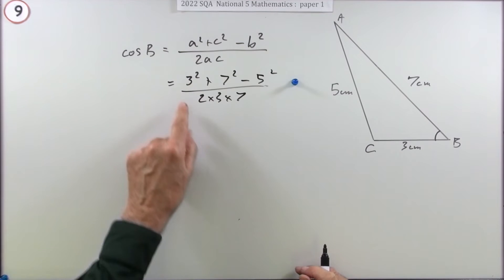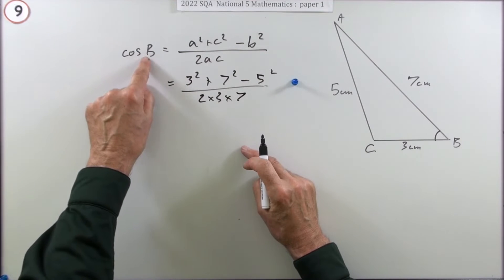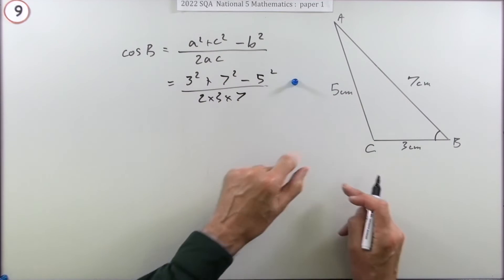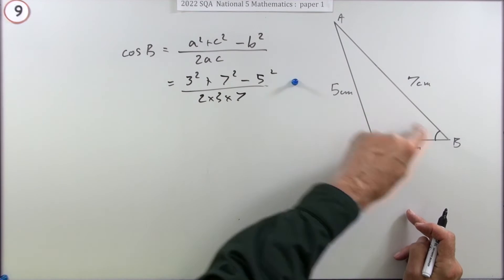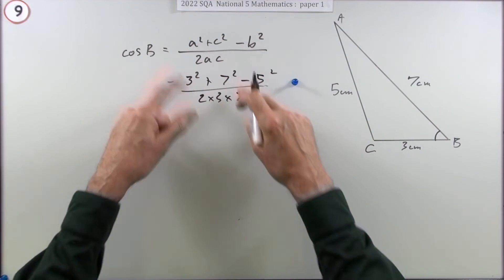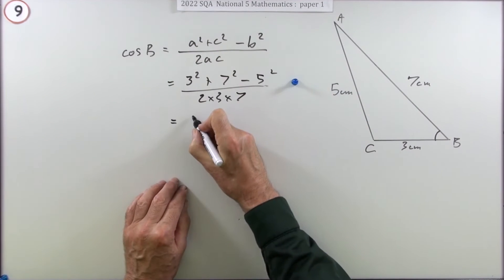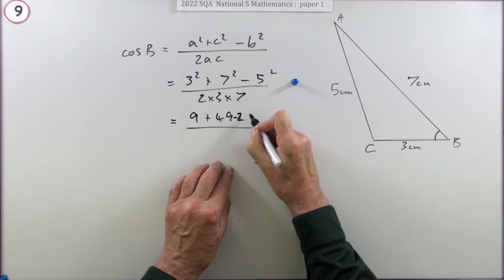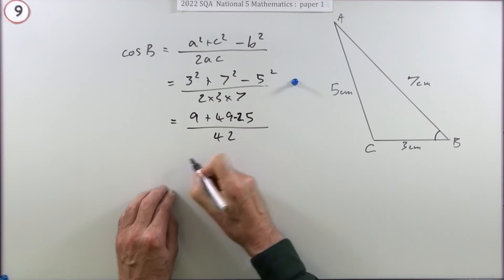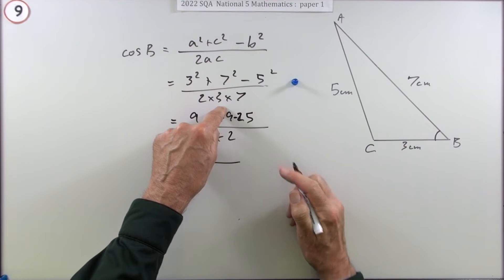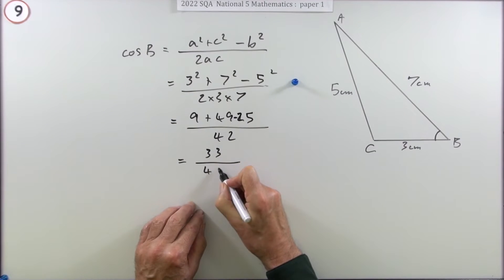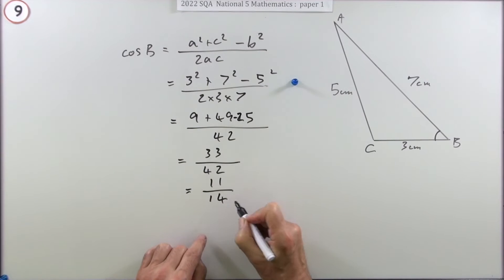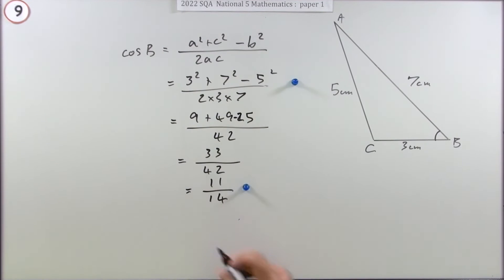You could have gone straight in with that because the pattern is quite easy — whichever angle you're looking for, the odd side out is that same letter, the one that subtends the angle. The rest is just made up from the other two. Now it's just arithmetic: three squared is nine, seven squared is 49, five squared is 25, six sevens are 42 — that's 58, take away 25 gives 33. They both divide by three: that goes to 11 and that goes to 14. So cos B equals 11/14, and that gets the mark.